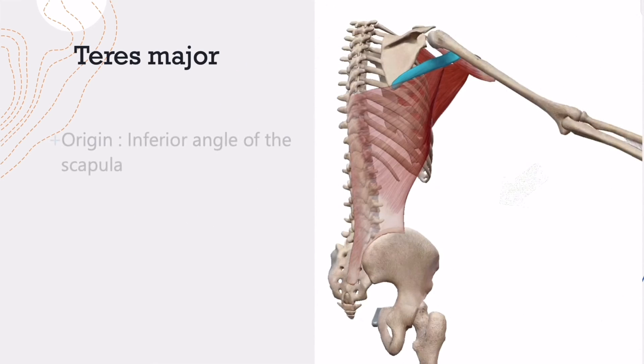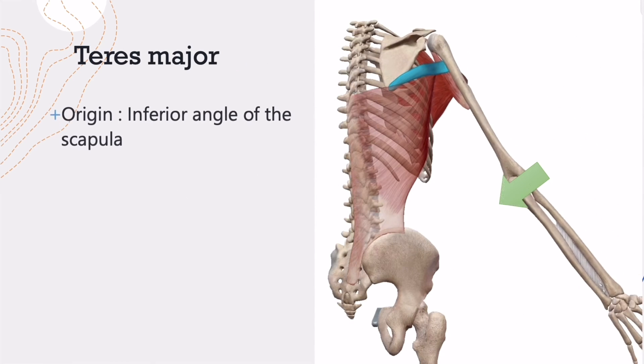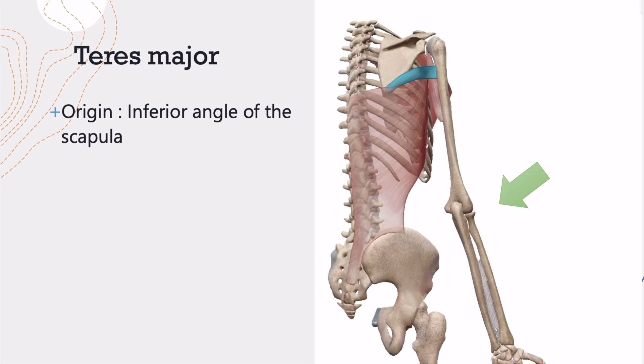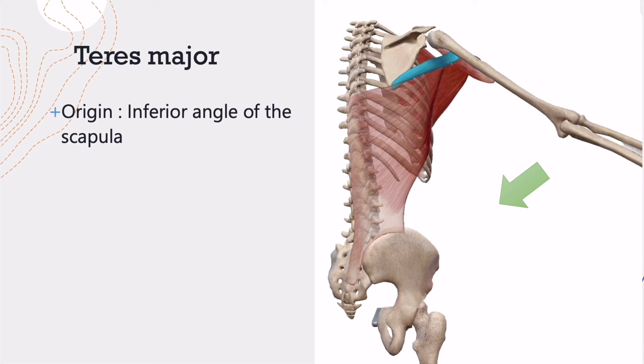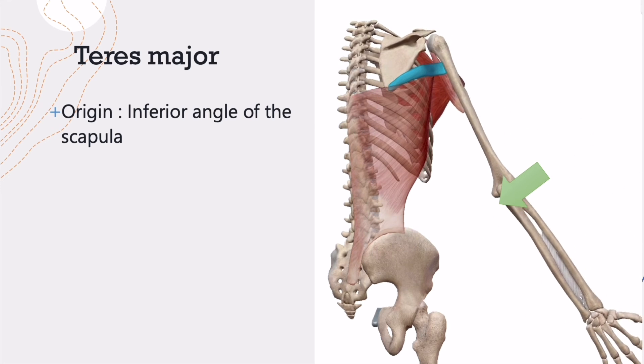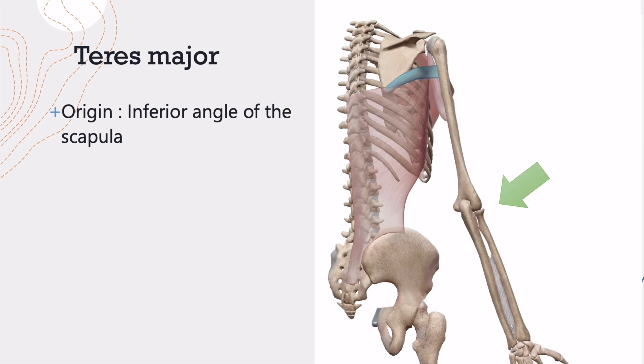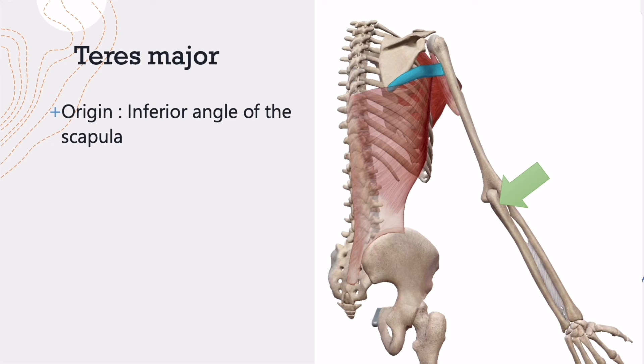The last one, teres major, starts at the inferior angle of the scapula and inserts at the intertubercular groove of the humerus.